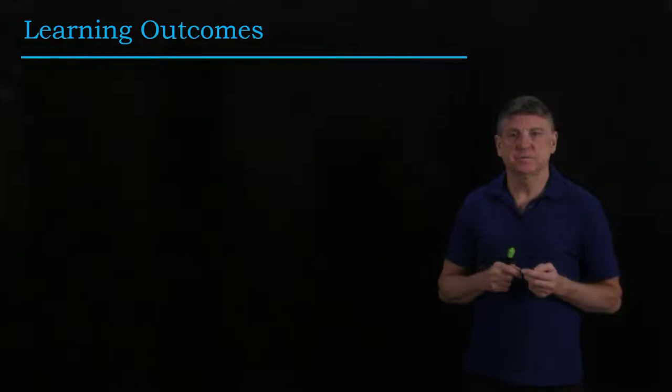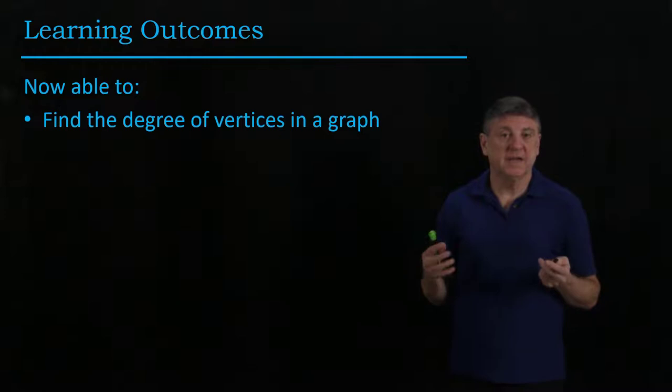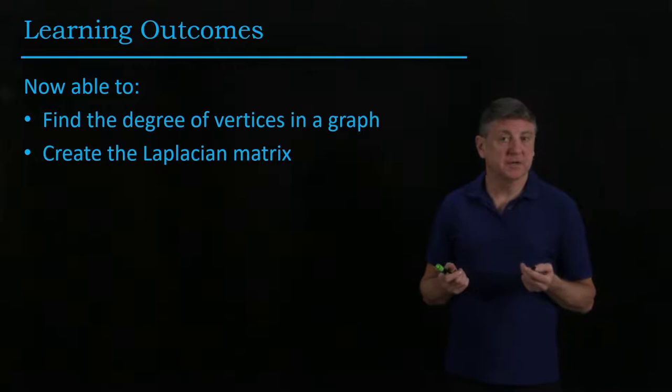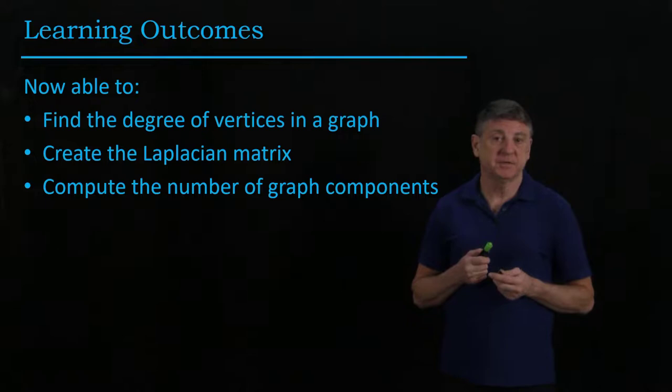Let's summarize what we've learned so far. We're now able to find the degree of vertices in a graph numerically, as well as going through the graph specification. We know how to create the Laplacian matrix. We can compute the number of graph components by examining the dimension of the null space of the Laplacian.